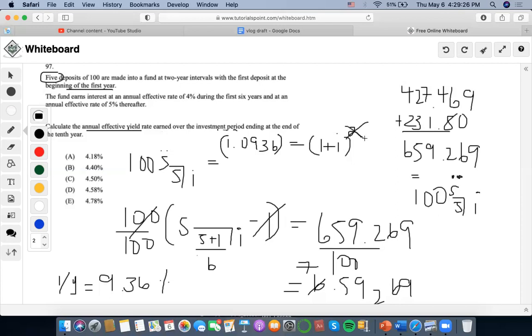One half, it's going to be 1.0936 to the one half, and then minus one. I'm going to get 0.04575, which means that, well, so basically 4.575%. It's about 4.58%. This one's closest to this answer. Thank you.